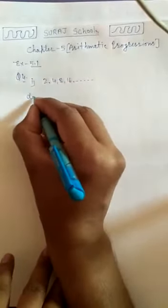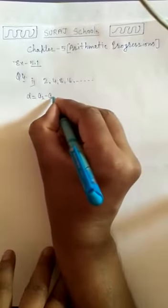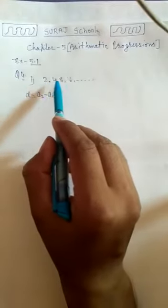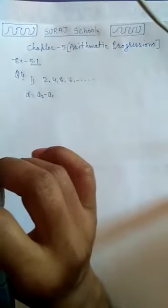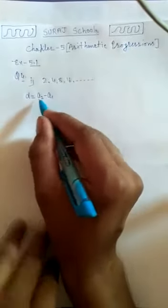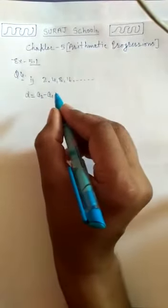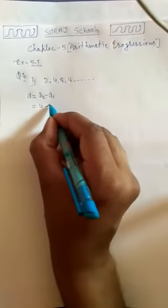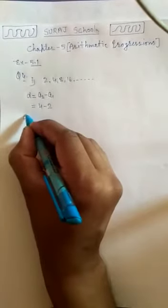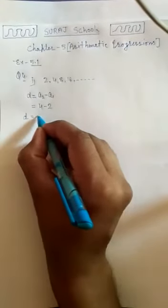Firstly, we find D — D means common difference. Here we have four terms, so we can find three values of D. First D: D equals A2 minus A1. A2 is the second term, which is 4, minus A1 which is 2. So D equals 4 minus 2, which is 2.